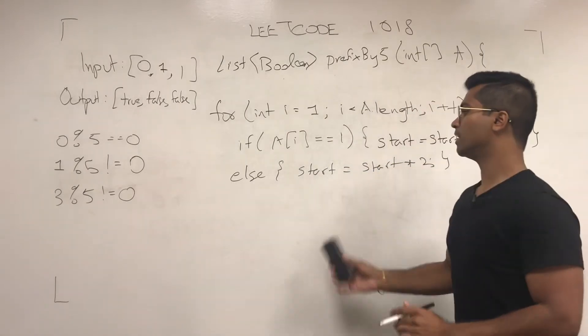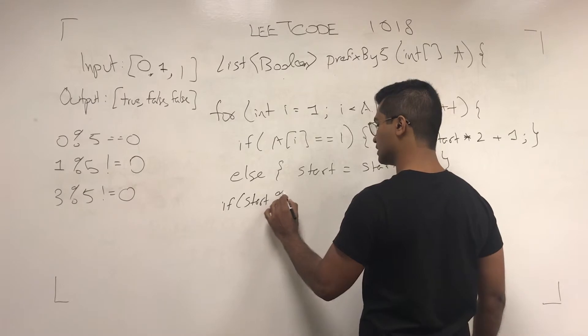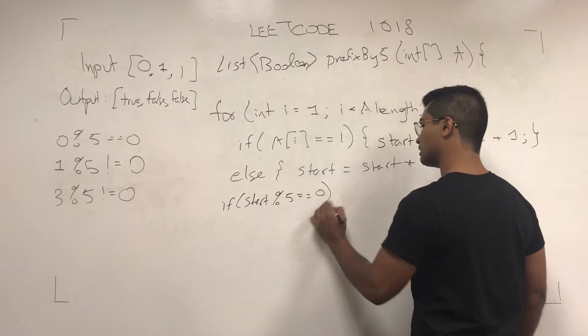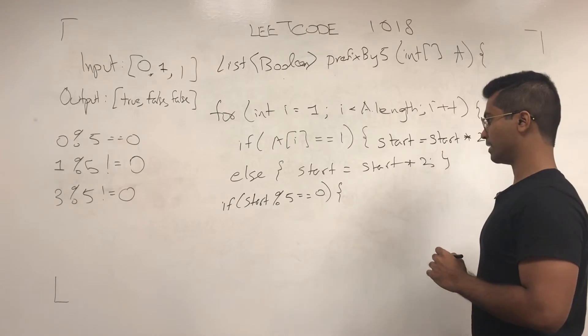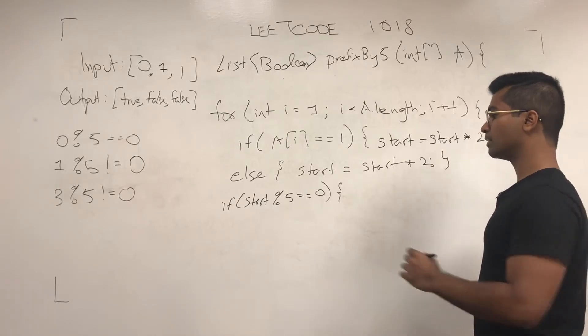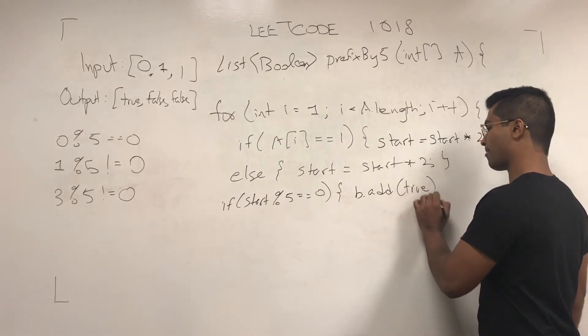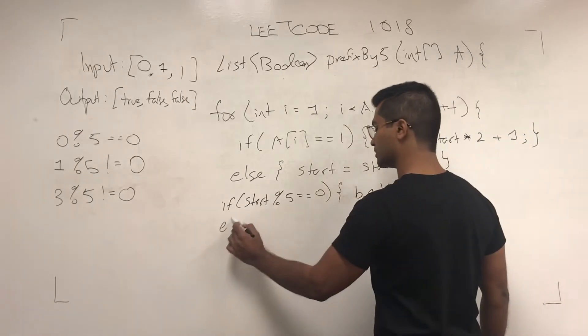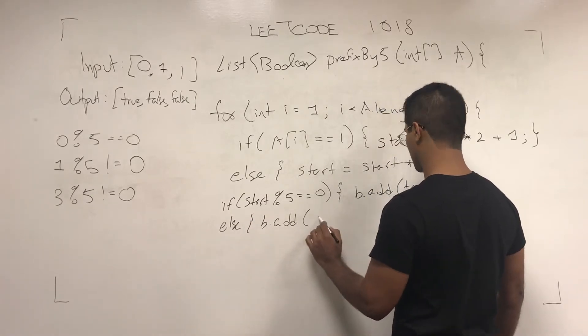Now what we do is if start is divisible by 5, then we add true, else b.add(false).